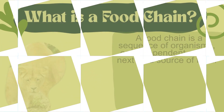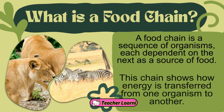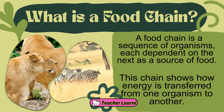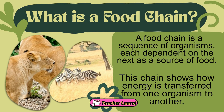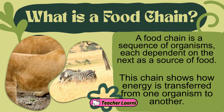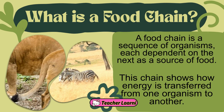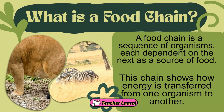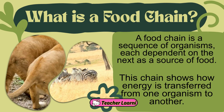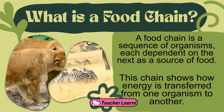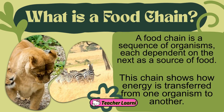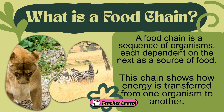Let us discuss what is a food chain. A food chain is a sequence of organisms, each dependent on the next as a source of food. This chain shows how energy is transferred from one organism to another.